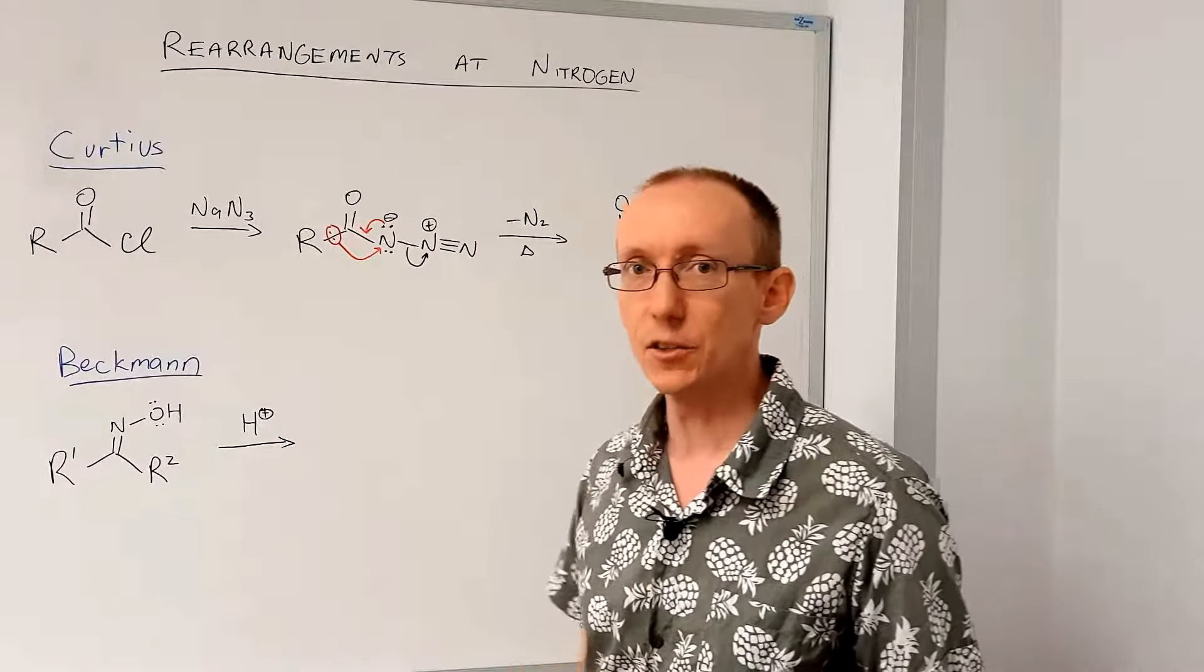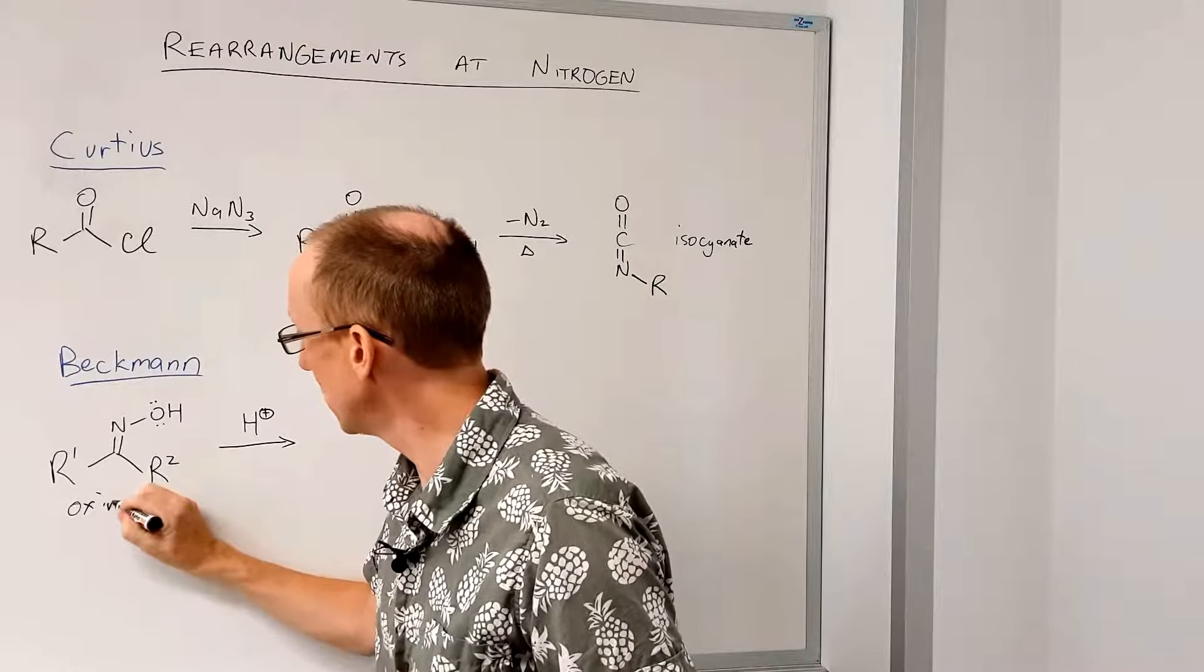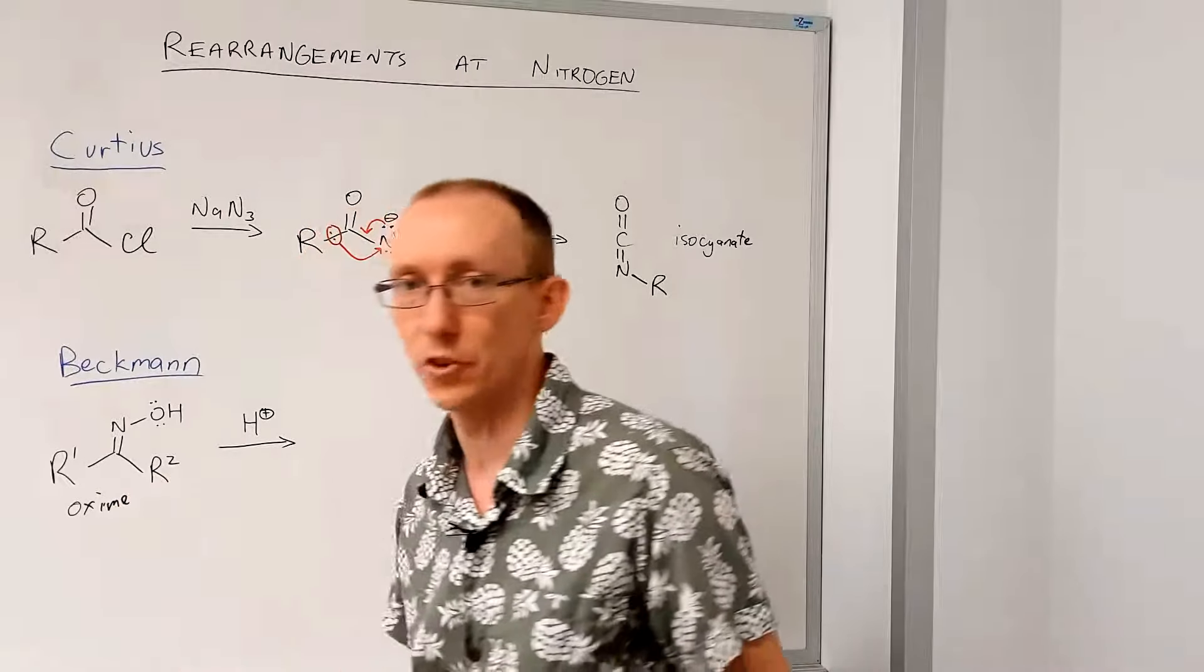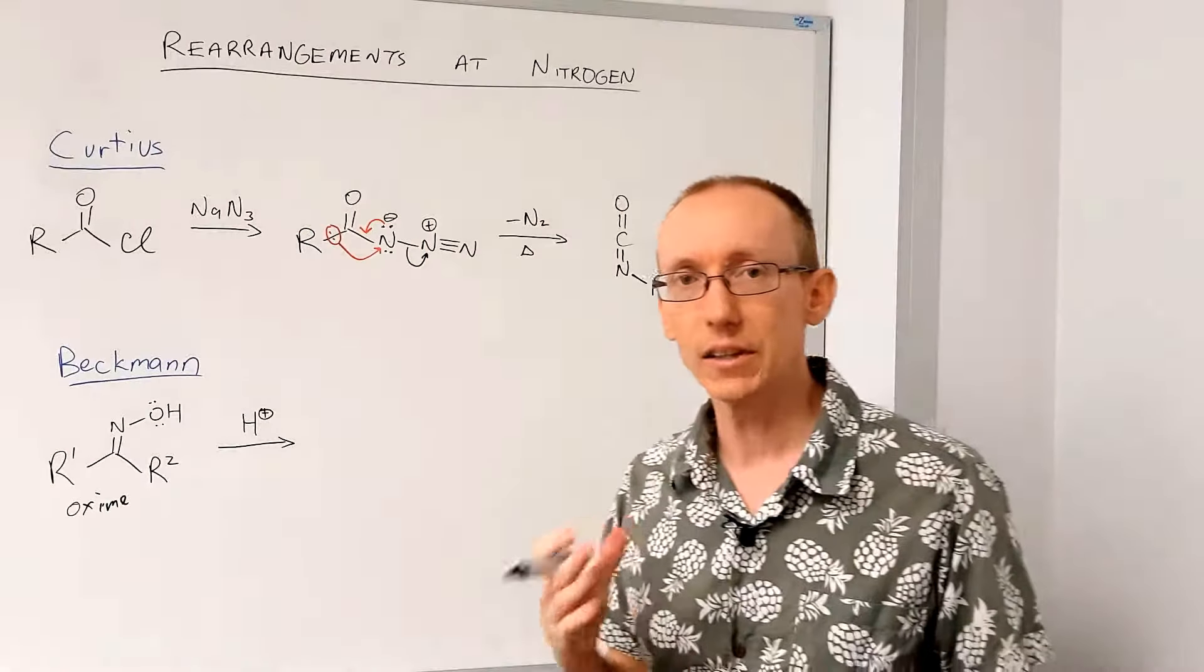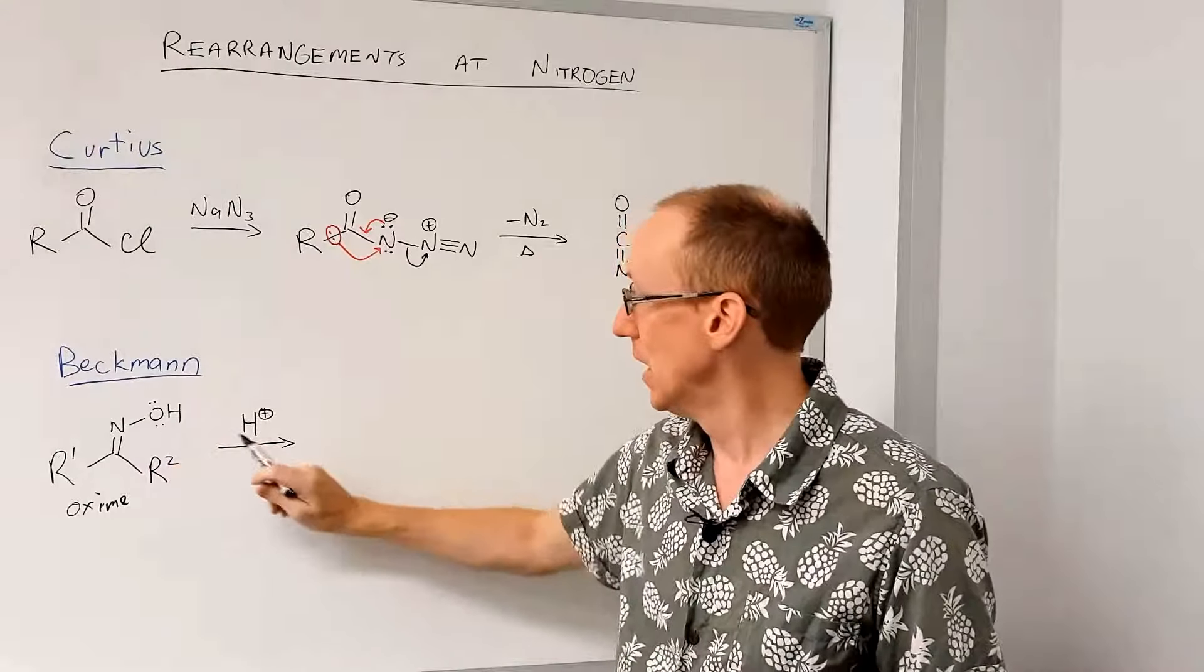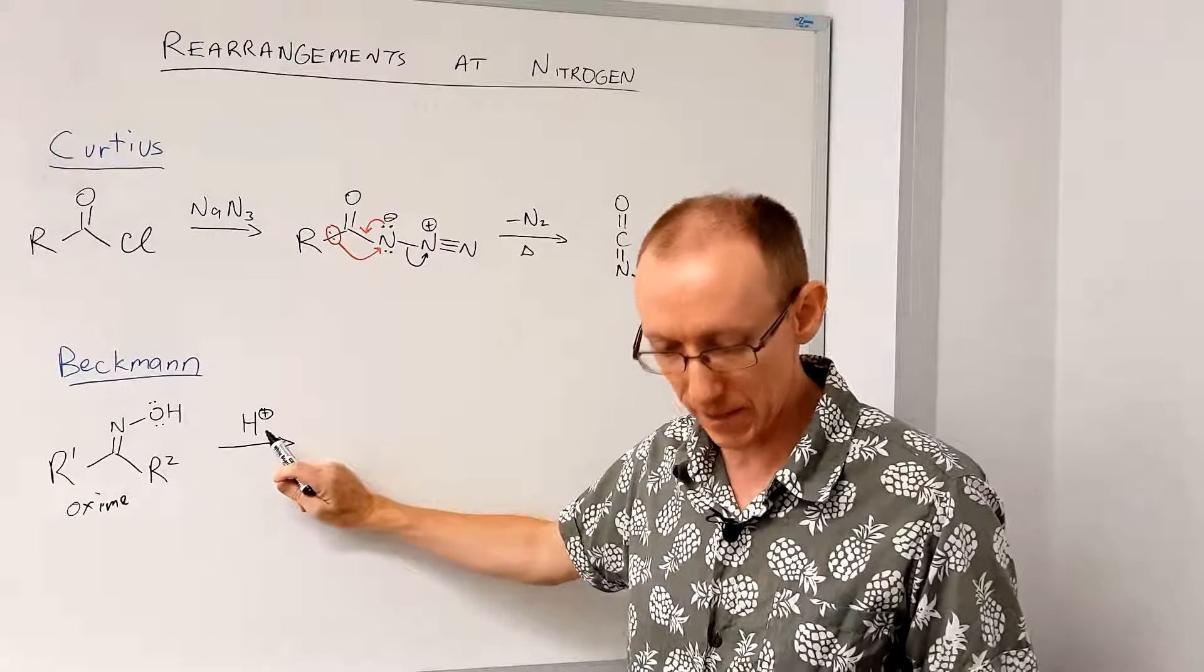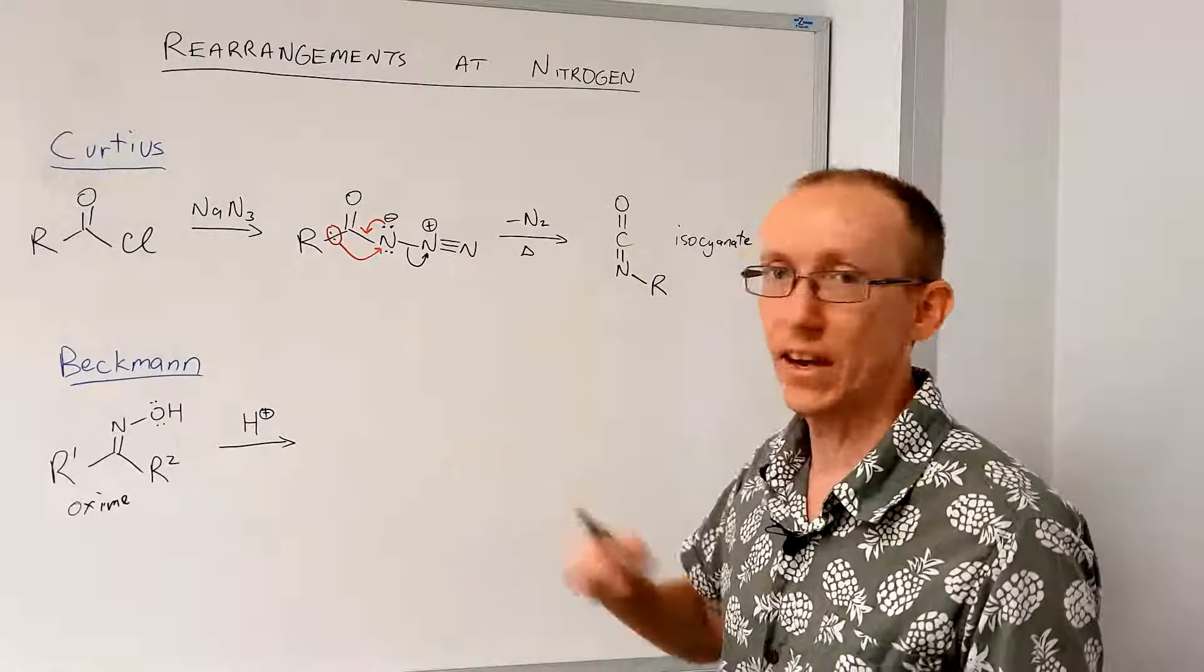Now the Beckman rearrangement starts off with an oxime. So this is a species that's very easy to produce from a ketone or a carbonyl compound or an aldehyde and hydroxylamine. Now if we treat an oxime with a proton source, an acid, then we can generate a reactive intermediate.